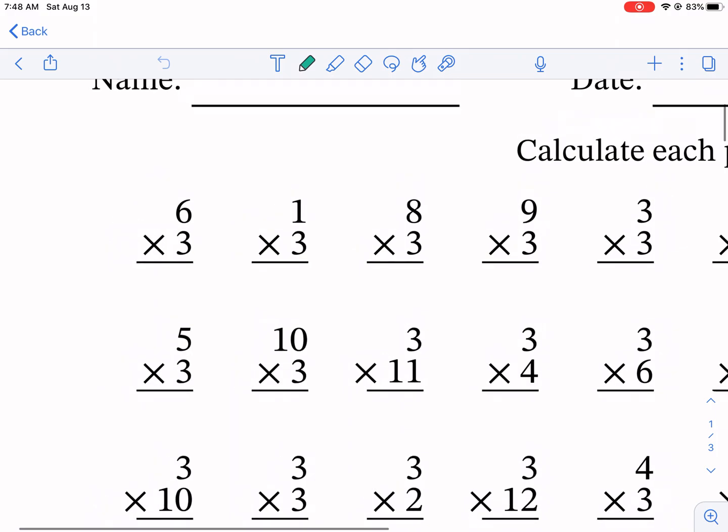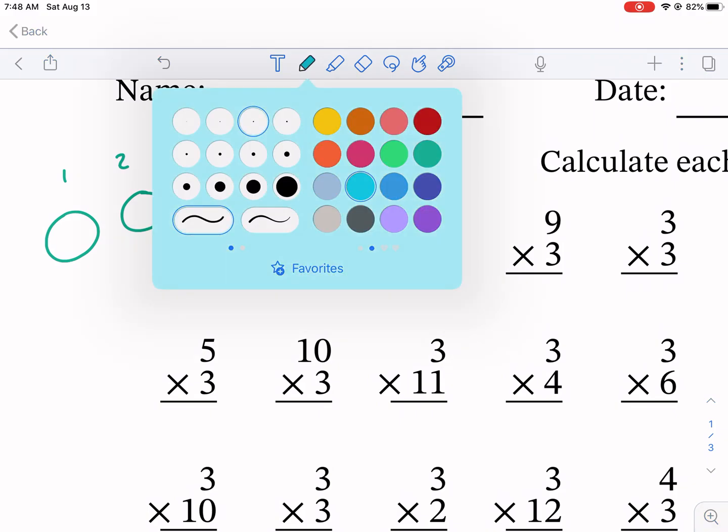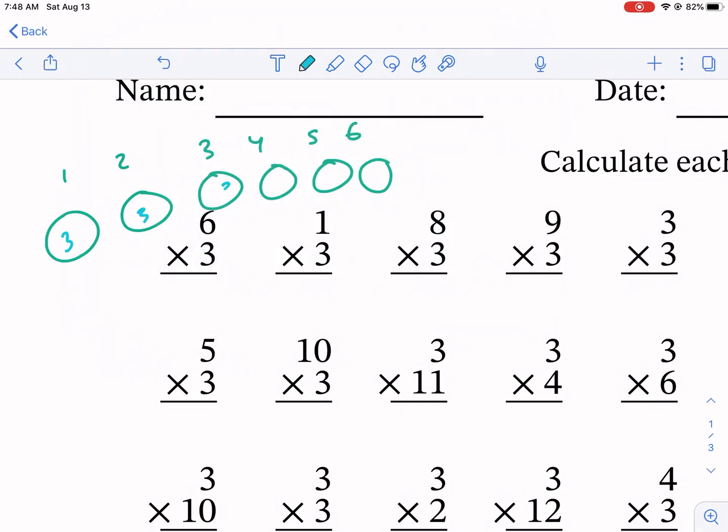So a couple things. One, if we're talking about multiplying, we need to remember that it's talking about groups of numbers. So if we have 6 times 3, that means we're going to have 1, 2, 3, 4, 5, 6 groups of 3 in each group. And then we figure out what the total is from there.